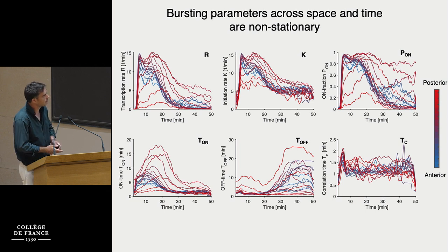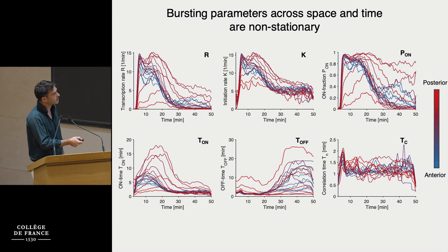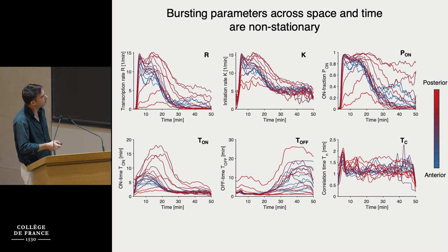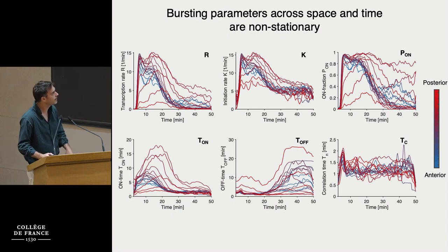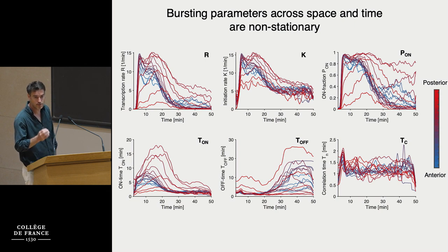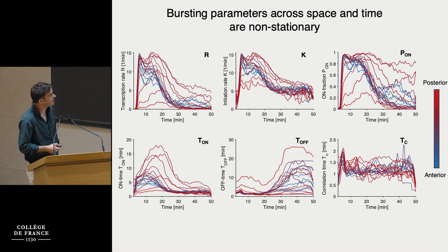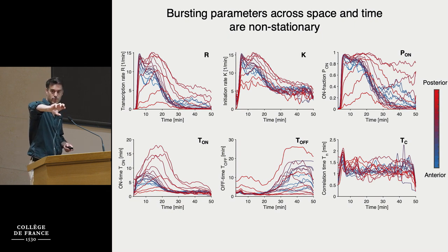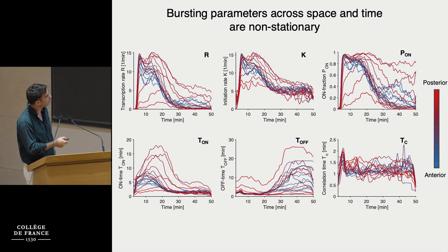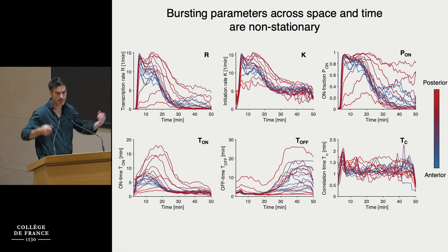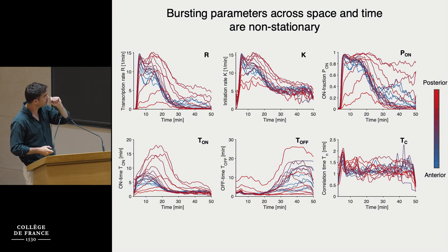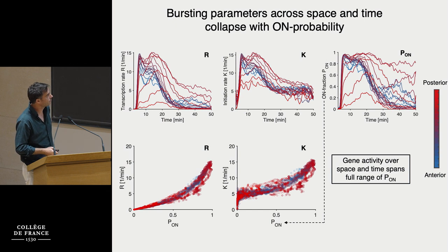We can do this marching along the entire AP axis, encoded in color, and for these six bursting parameters the data looks all over the place — highly non-stationary, so steady state is questionable. These are very active and dynamic control parameters. It turns out that time is not a very good parameter to look at. It's much better to parameterize by the on-probability p-on — viewing it as a knob from completely off to completely on. Plotting the rate as a function of p-on, and the initiation rate as a function of p-on, suddenly all of the data collapses.